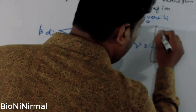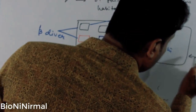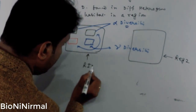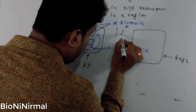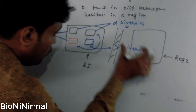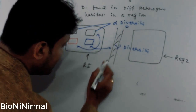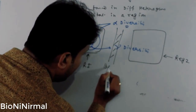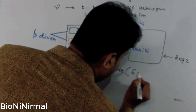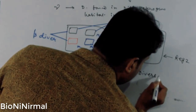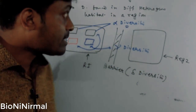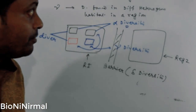Next is delta diversity. If there are two regions separated by any barrier, the biodiversity found in those two different regions when separated by a barrier is called delta diversity.